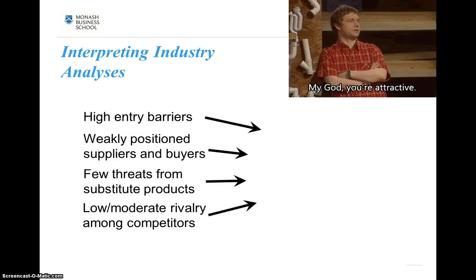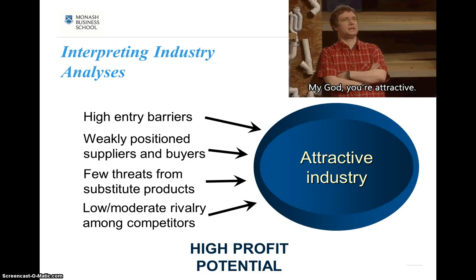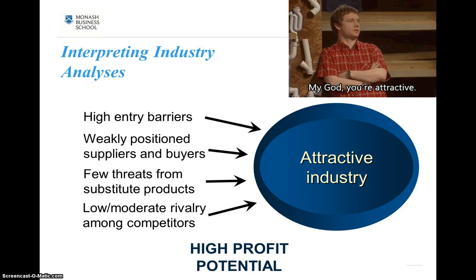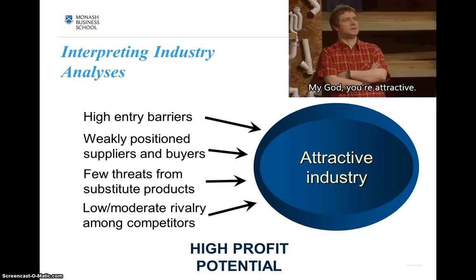Finally — and this is something many companies miss — it's not enough to assess each of the five forces individually. You must aggregate them all together to gain an overall picture of how attractive and profitable an industry is. If you identify high entry barriers, weakly positioned suppliers and buyers, few substitute product threats, and low or moderate rivalry, then you have an overall attractive industry. The key point is to assess the overall strength by combining all five forces — only then can you truly assess industry attractiveness and profit potential.